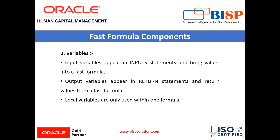A variable is a named storage location. Input variables appear in input statements and bring values into the Fast Formula. Output variables appear in return statements and return values from the Fast Formula. Local variables are only used within one formula. So a variable can be of three types: input variable, output variable, and local variable. In this formula, hours worked is a variable.